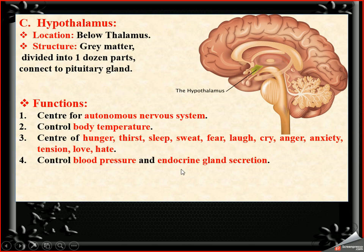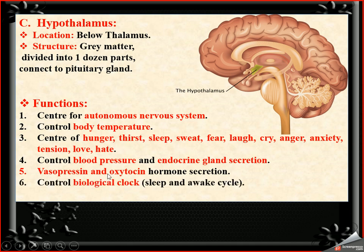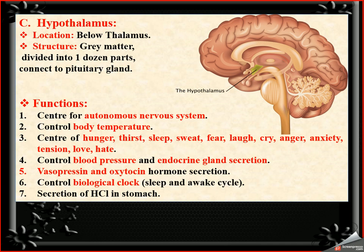The hypothalamus also controls blood pressure, endocrine gland secretion, and secretes vasopressin (also called ADH hormone) and oxytocin hormone. It controls the biological clock — regulating sleep and wake cycles so that a person sleeps and wakes at particular times each day. It also controls secretion of HCL from the stomach.